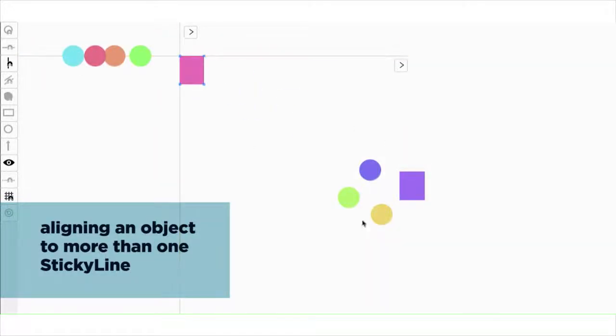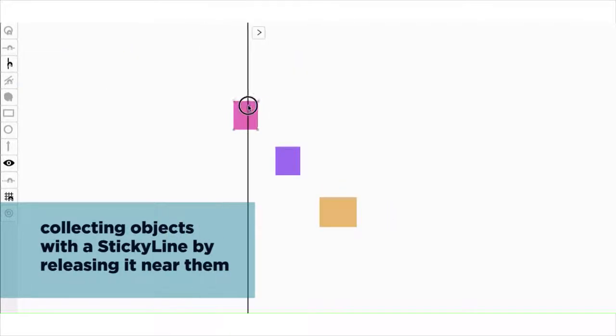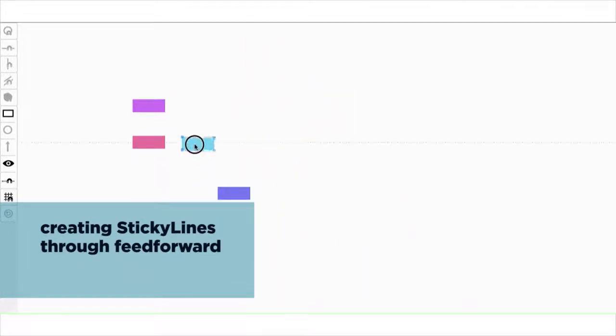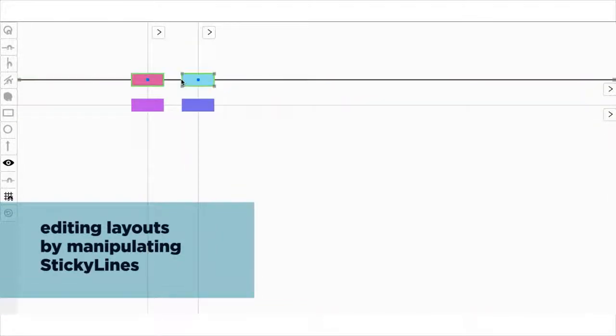Objects can be attached to more than one sticky line, by their centers or their sides. Users can collect objects with a sticky line by releasing it close to them. The system provides feedforward to show possible alignments and automatically creates sticky lines accordingly.